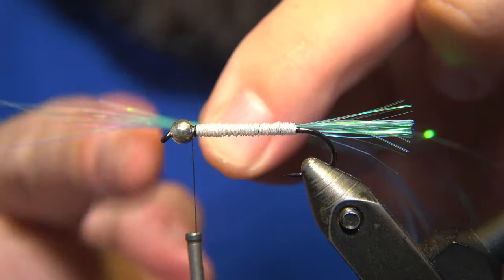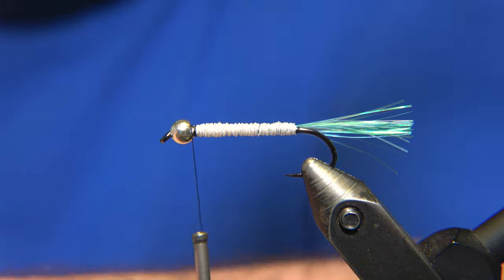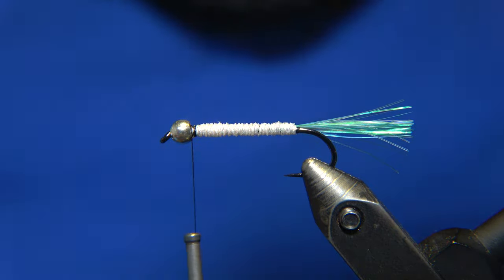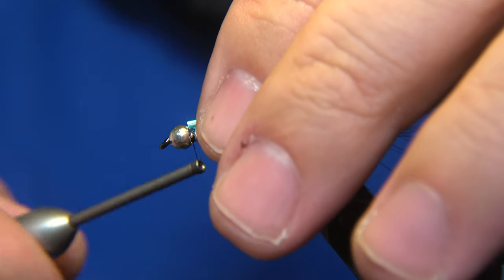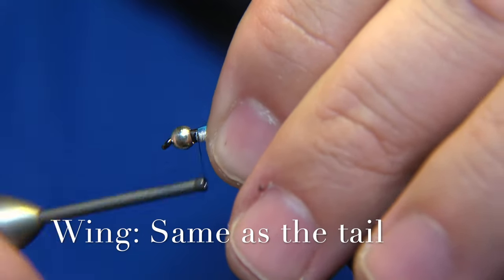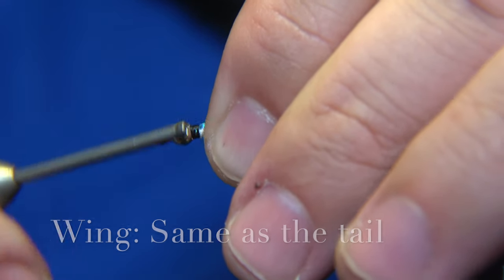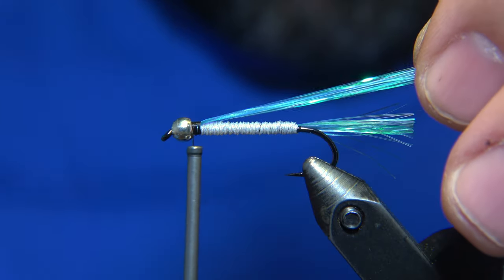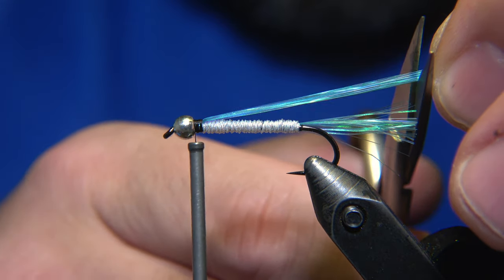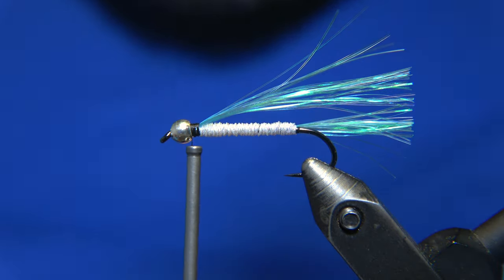I pre-cut it so it's going to be even on the front like this. I'm gonna lock this down with our thread. This is the same material as I use, the same flashabou as I use for the tail. And we'll trim it level with the tail of the fly.